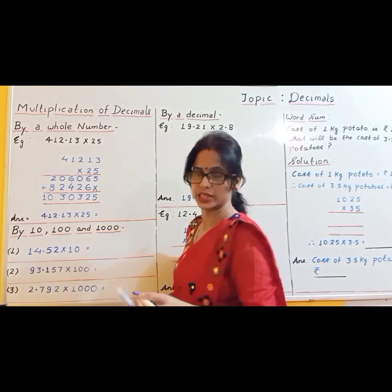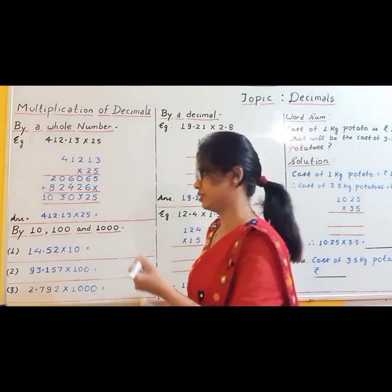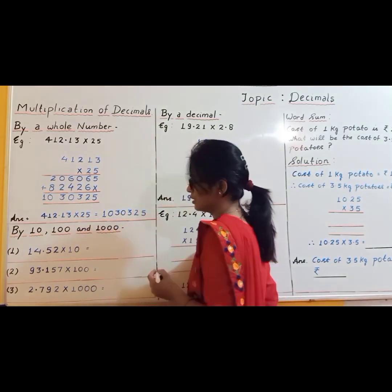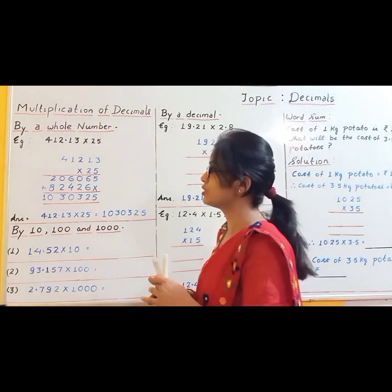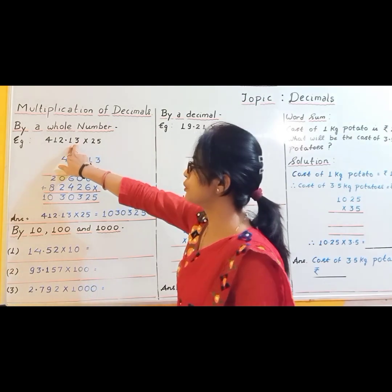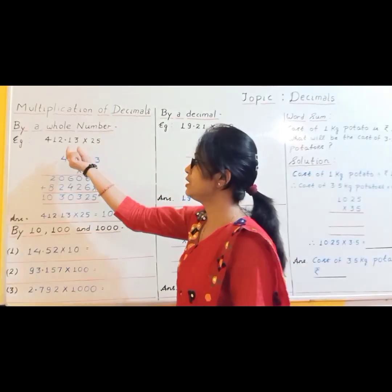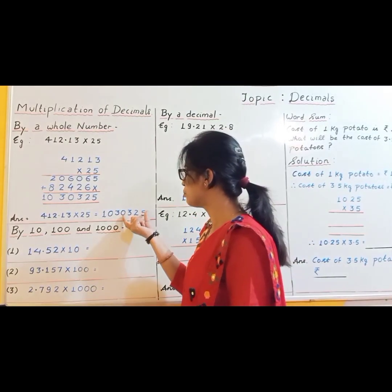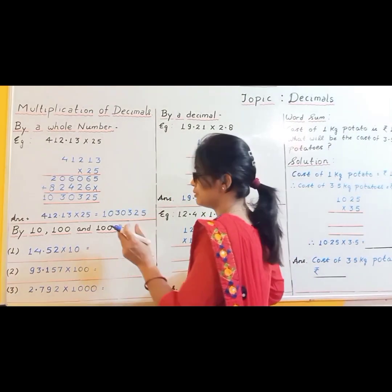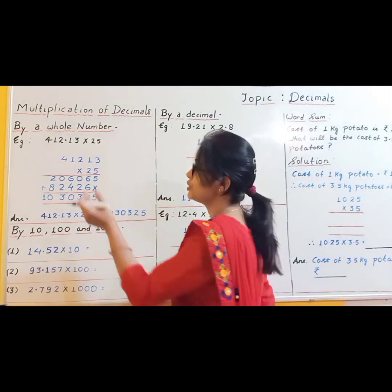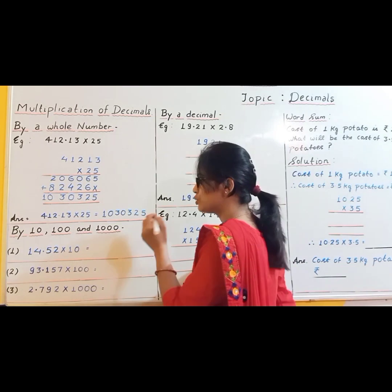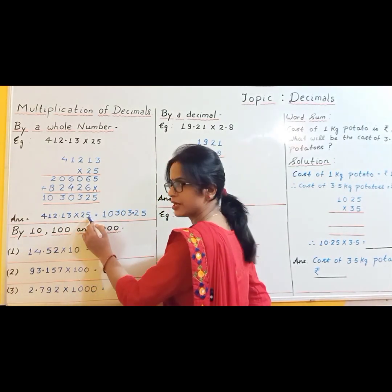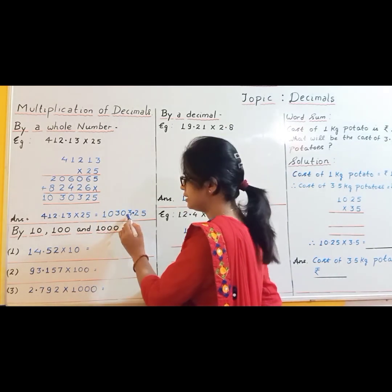Now, the very important thing is how to put the decimal in the product. The product is 1030325. The rule is: first of all, count the number of decimal places in the decimal number. You can see the number of decimal places is 2, so there must be 2 decimal places in the product. Count 1 and 2 from the right and put the decimal point there. So 412.13 into 25 equals 10303.25.